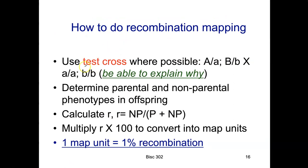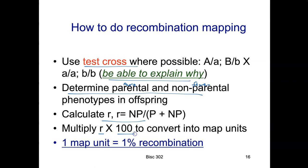To do recombination mapping, you always want to use test crosses — you should know why. If you tried to do this with a dihybrid cross where both parents were heterozygous and both had crossover, you'd have to work very hard to look at the offspring and work backwards to figure out crossover frequency. When you look at the results, determine which are the parental and non-parental types — there will be more of the parentals and fewer non-parentals. Calculate your R value and then multiply by 100% to convert into map units.